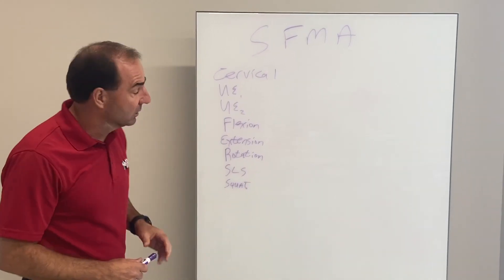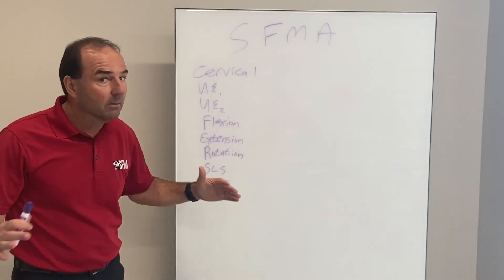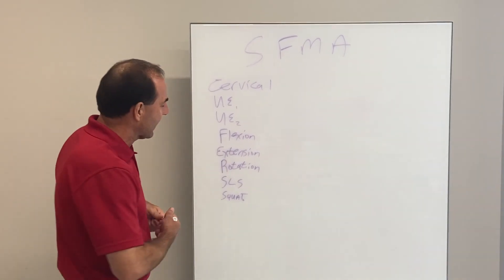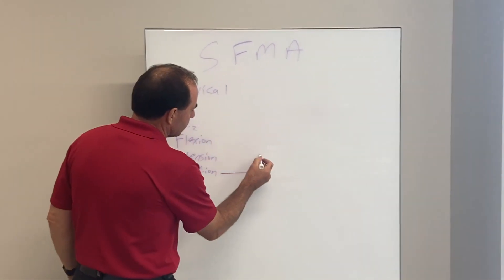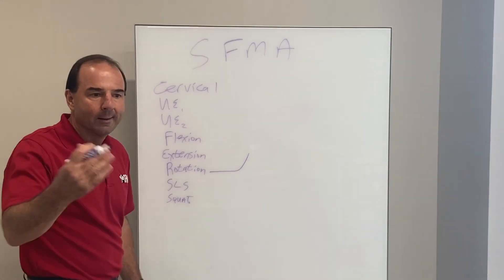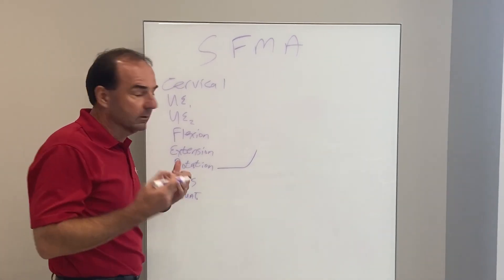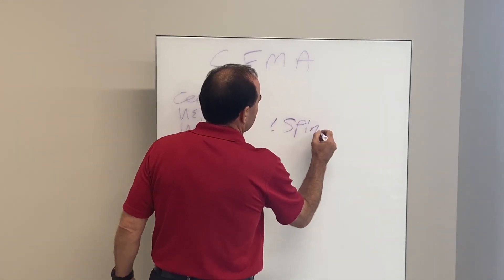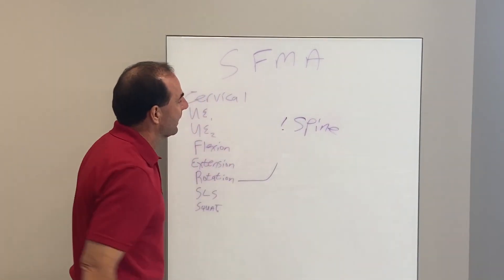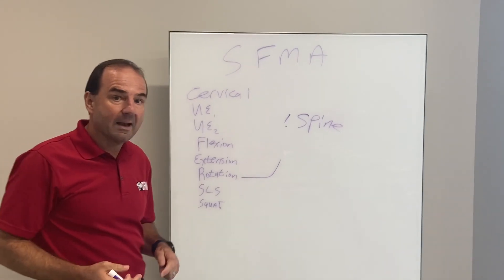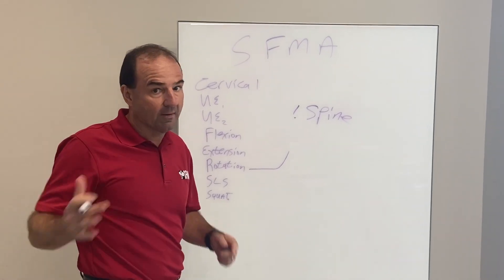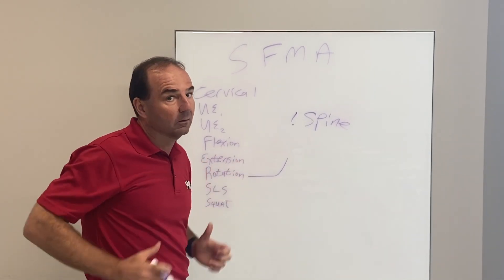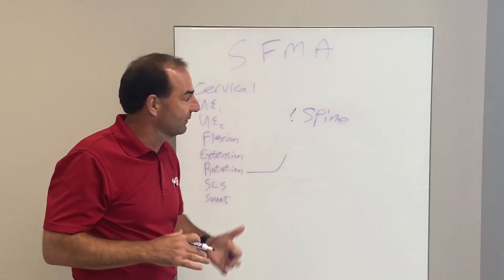At the SFMA, when we're concerned about a pattern that isn't perfect, we break it down into its parts. When we think about rotation, you're going to say spine — and spine is really important. We're going to look at the spine in a couple of different ways: actively and passively if active is a problem. We'll look at the upper part of the spine and the lower part separately because they actually move differently.